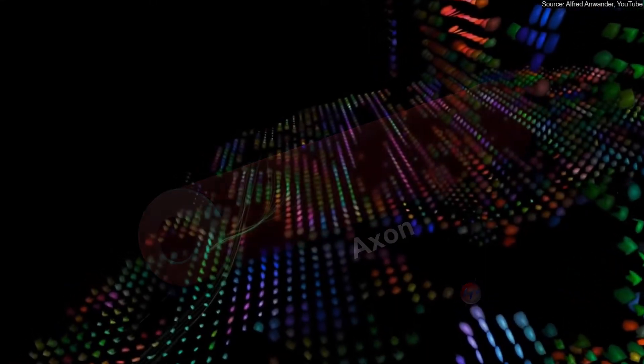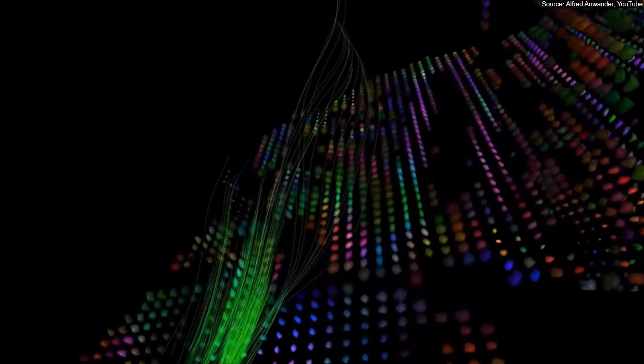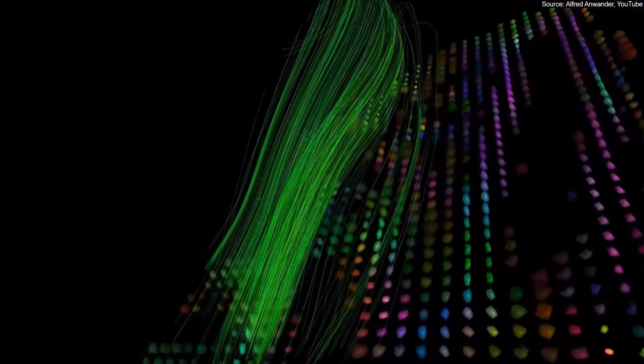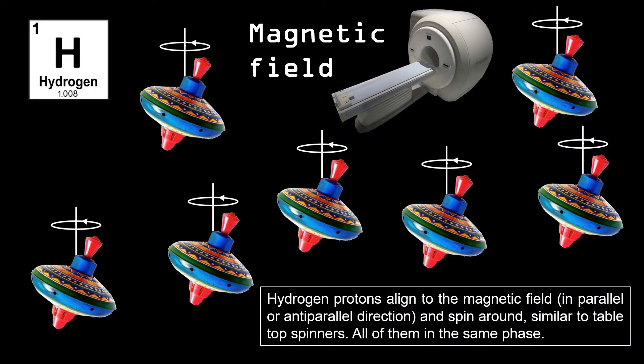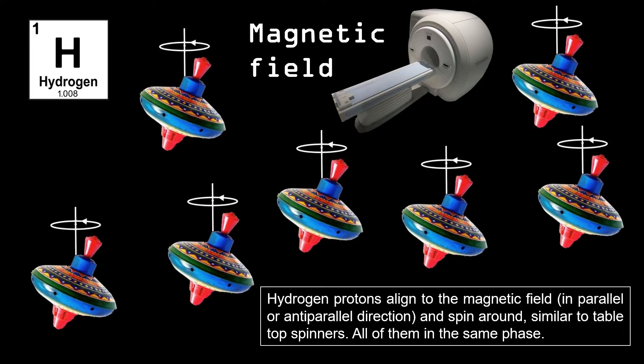Now, let's take a more detailed look at how DTI can detect the differences in hydrogen atom movement in the brain. In the MRI scanner, hydrogen protons align themselves to the magnetic field and spin around their own axis, all in the same phase.